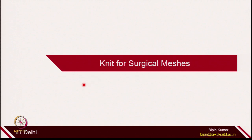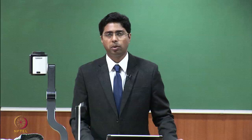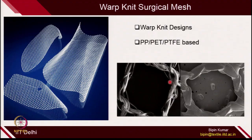Now let's move to the second area: surgical mesh. Surgical mesh is very, very important. Whenever there is any surgery, especially in hernia, which is one of the key medical problems — we cut a component of a certain part of the body and provide some mesh or support surface. Surgical meshes are one of the key markets for weft and warp knitted structures. Mostly warp knit designs are used, and they provide a support surface near the surgical area.